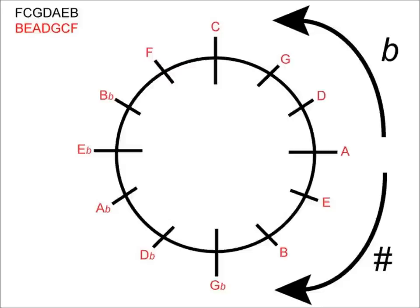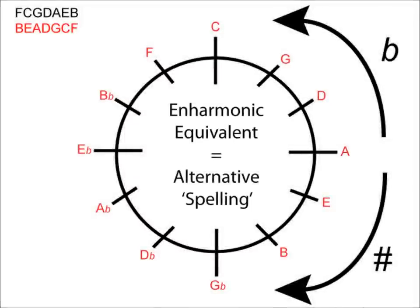Hopefully you can see how easy and similar the circle is to use compared to major keys. However, we do need to make some final tweaks to ensure that our circle works for all minor keys. We're going to add in some enharmonic equivalents. Enharmonic equivalents means the alternative spelling of a note — for example, B flat is the same as A sharp, D sharp is the same as E flat, and so on.